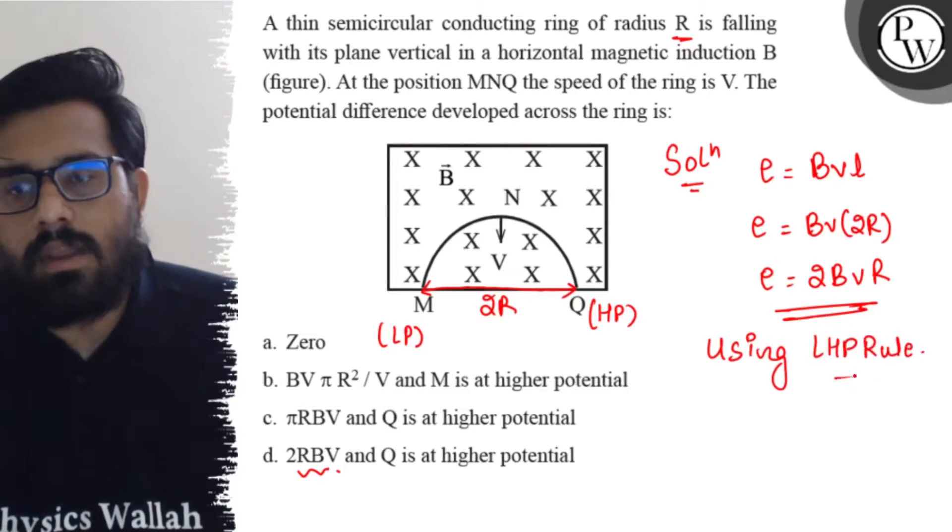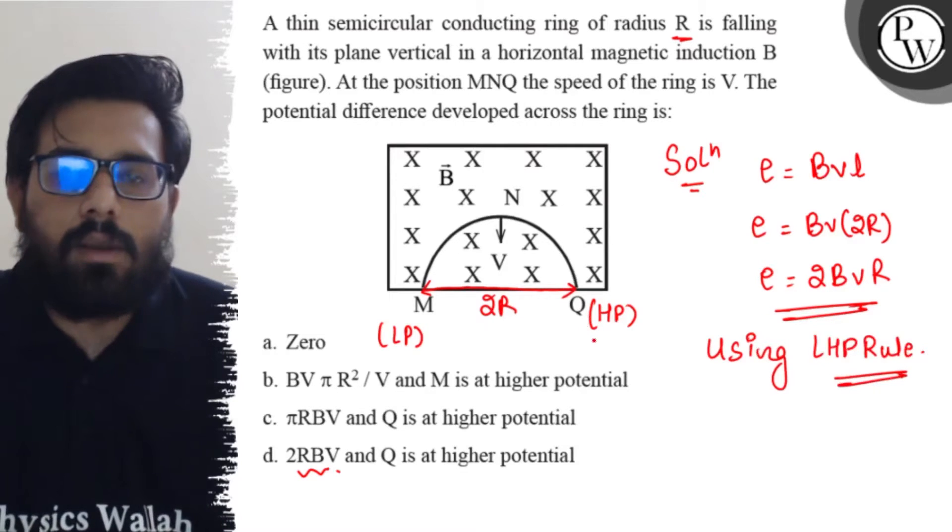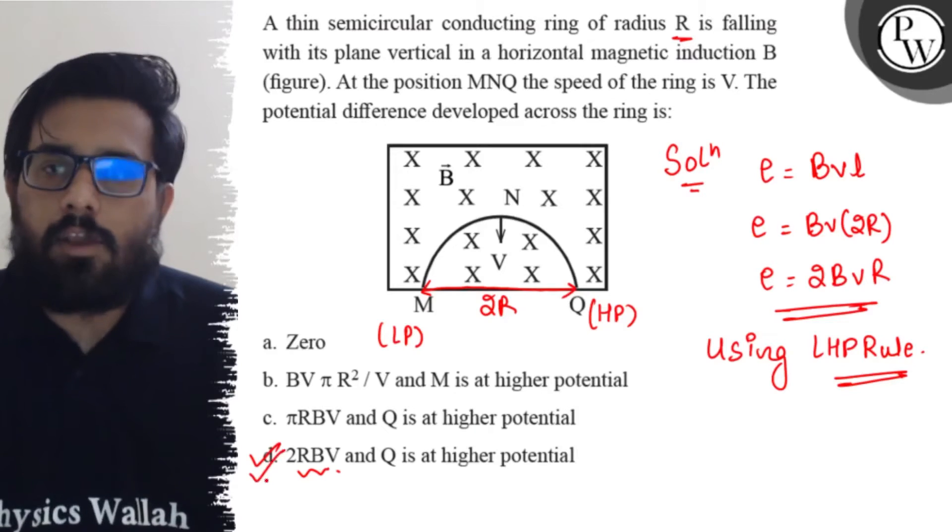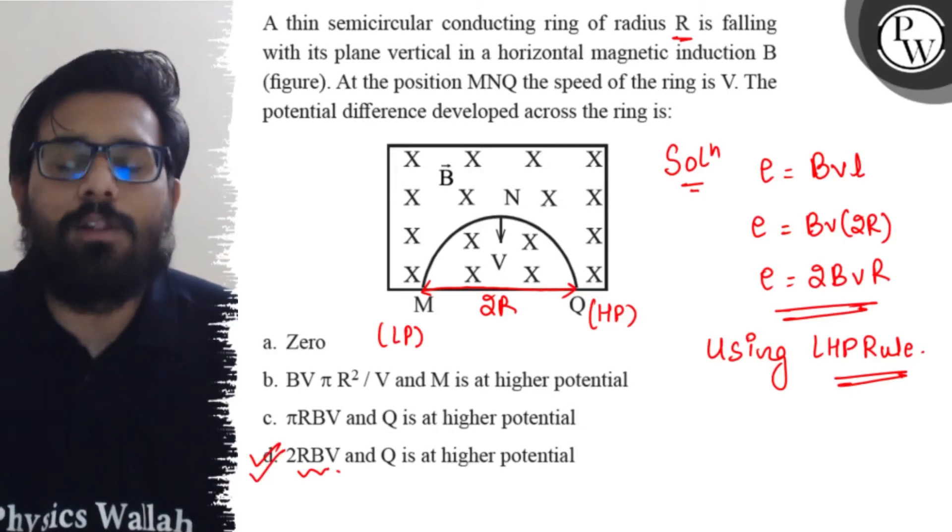So as per the left hand palm rule, Q will be at higher potential. So your D option is absolutely right and I hope the concept gets cleared now. All the very best.